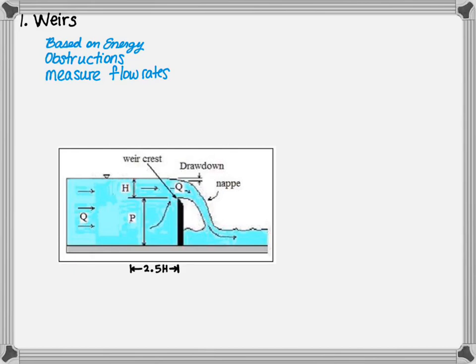As flows travel over the weir, the flow experiences drawdown. This occurs because the flows accelerate over the weir, pulling the flows down.